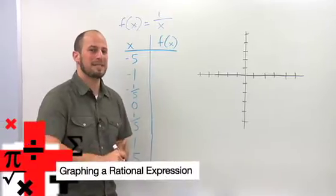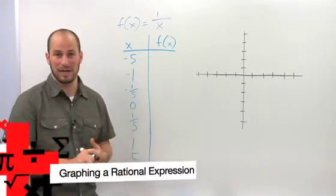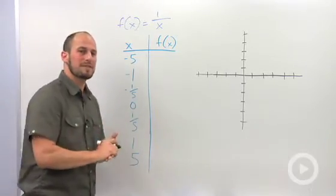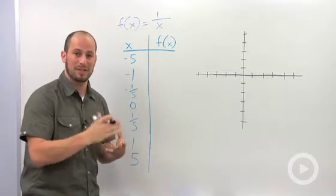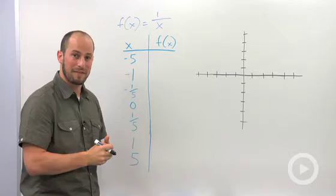We want to look at the graph of a basic rational expression, 1 over x. For this lesson we're going to look at f(x) equals 1 over x, the function 1 over x, and we're going to graph this by just plotting some key points.